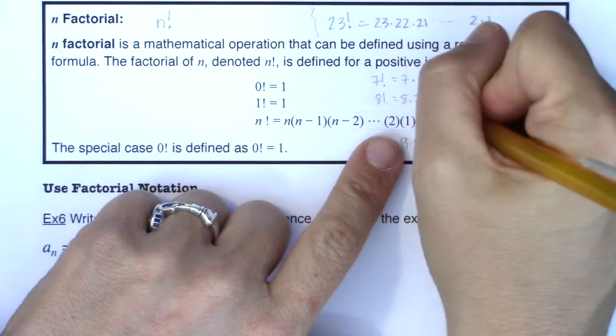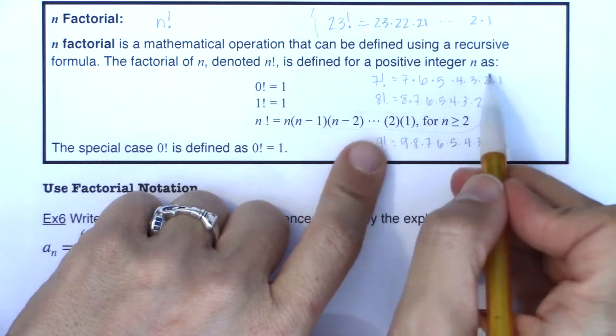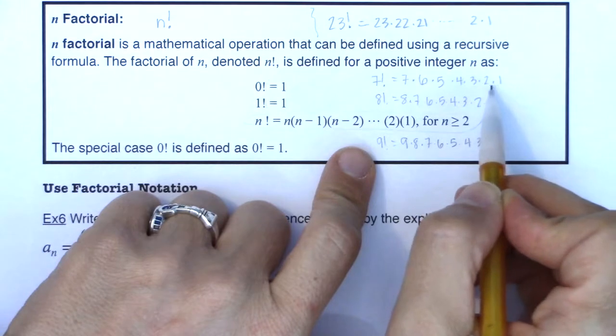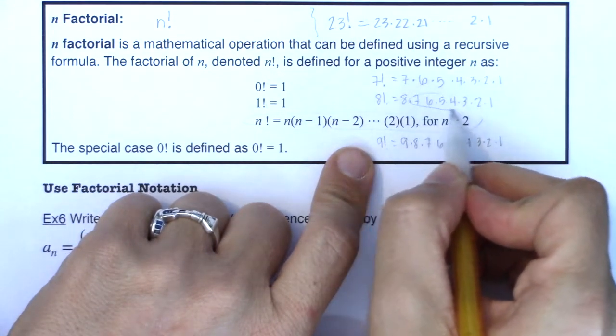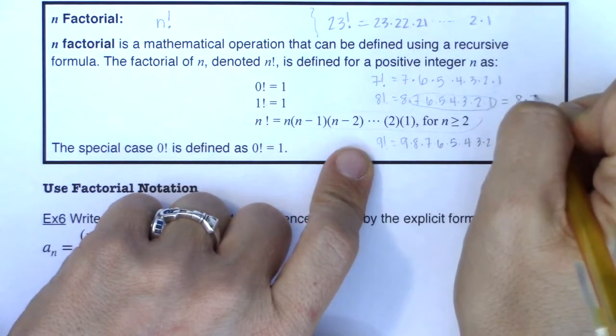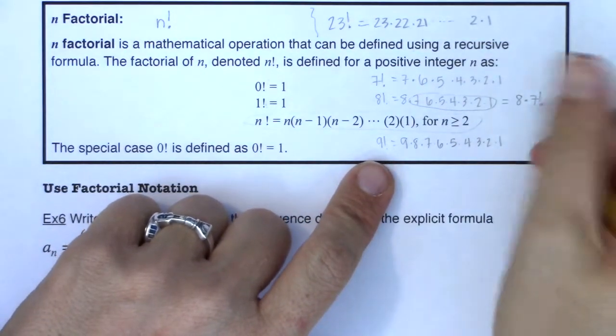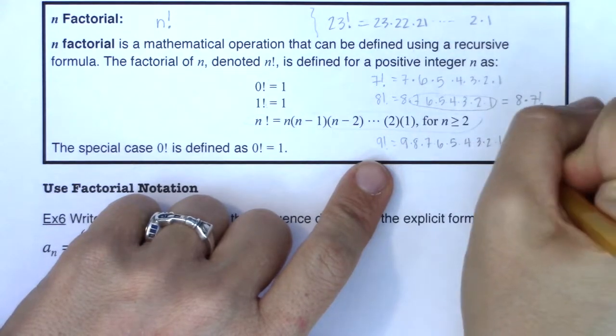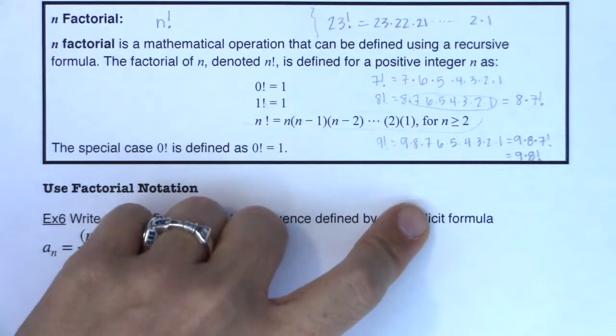Now, one thing I do want to point out. You're with me that seven factorial is seven times six times five times four times three times two times one. And eight factorial is eight times all of this, right? Now, we just said all of that is seven factorial. So I could write this as eight times seven factorial. Mind blown. Am I right?